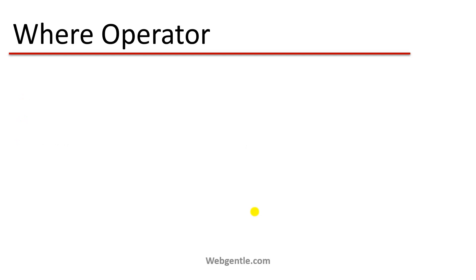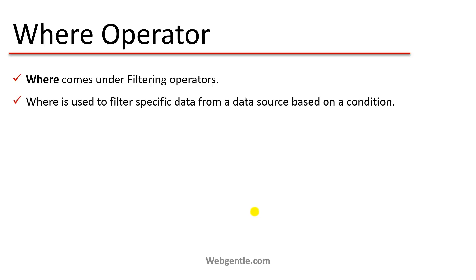First let's understand what WHERE is. WHERE comes under filtering operators. As we saw in the previous part, there are two methods under filtering operators: the first one is WHERE and the second one is OfType. WHERE is used to filter specific data from a data source based on a condition. WHERE always expects a condition — you can write more than one condition or just one, based on the requirement.